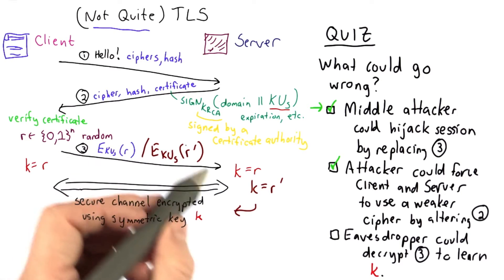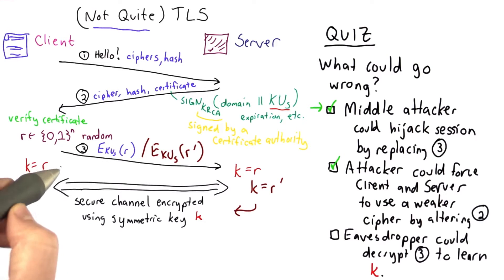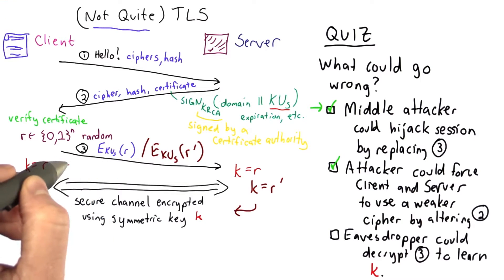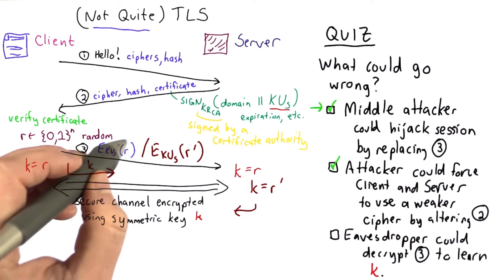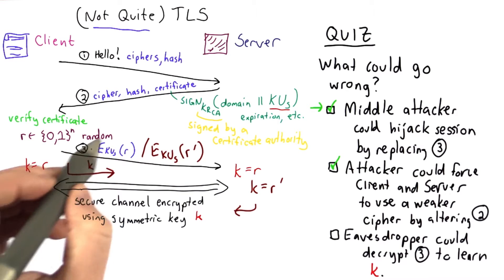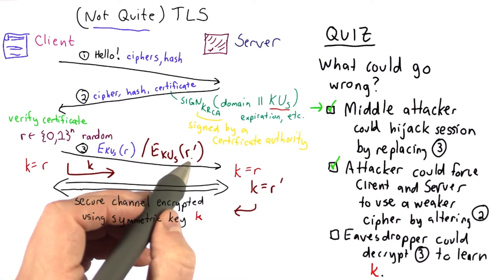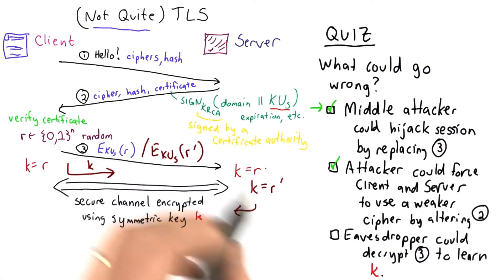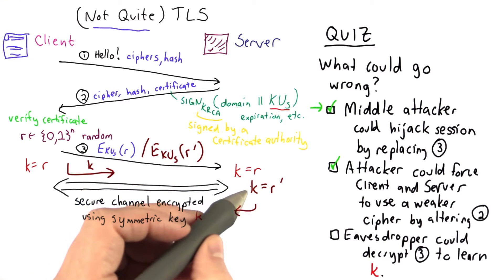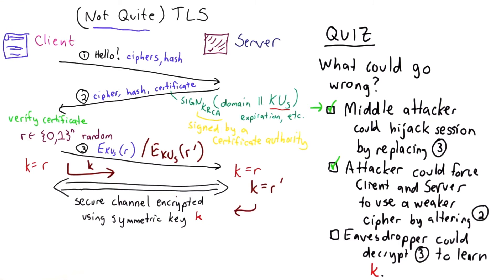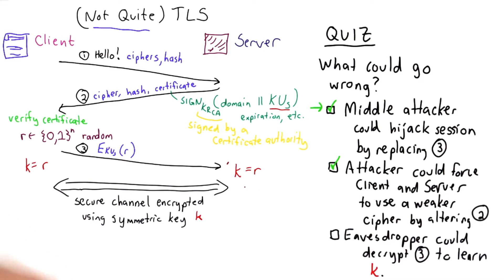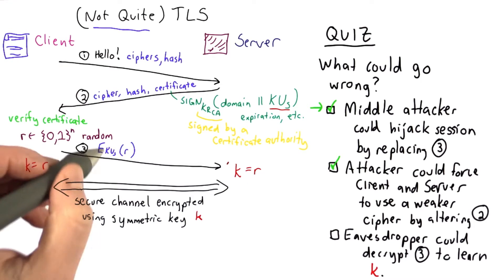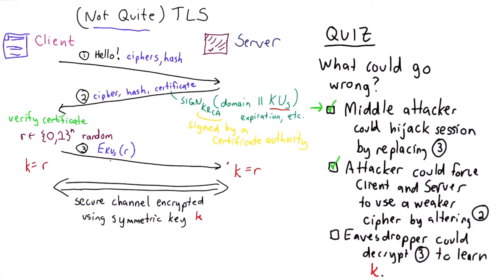It wouldn't allow the attacker to hijack the entire session though, because the client messages would still be encrypted with K, not known to the attacker based on this R value. The attacker doesn't have a way to decrypt this, just a way to change the key the server picks. But that's a pretty serious problem if the server is sending messages that the attacker can intercept and decrypt. So this is a problem, and what we'd like to do is change it so the key incorporates more values that couldn't be interfered with by the attacker.